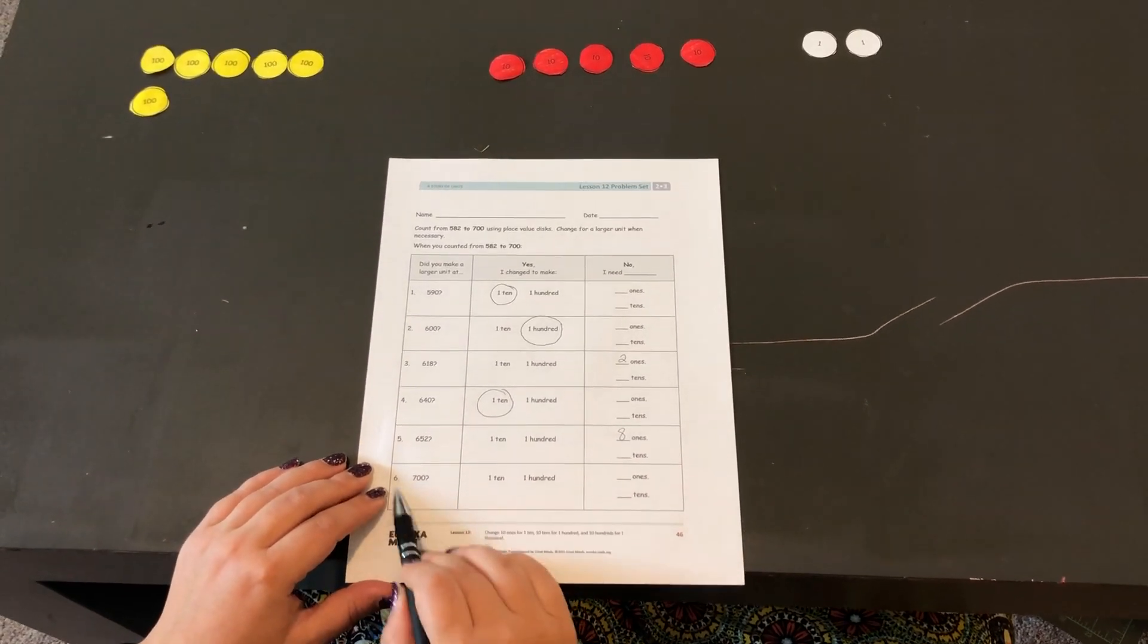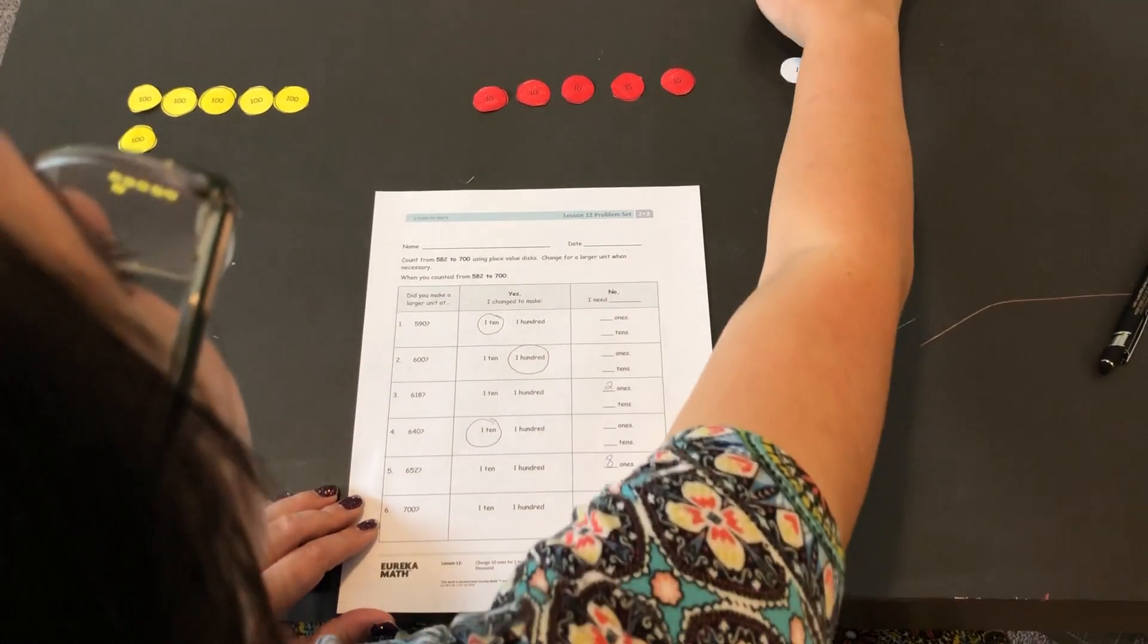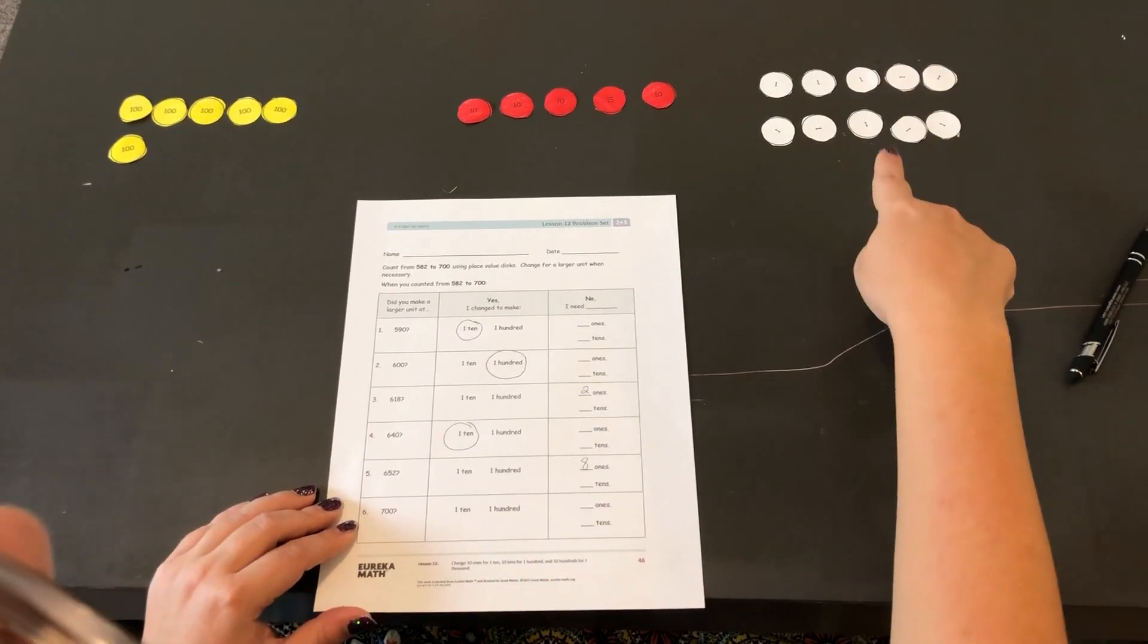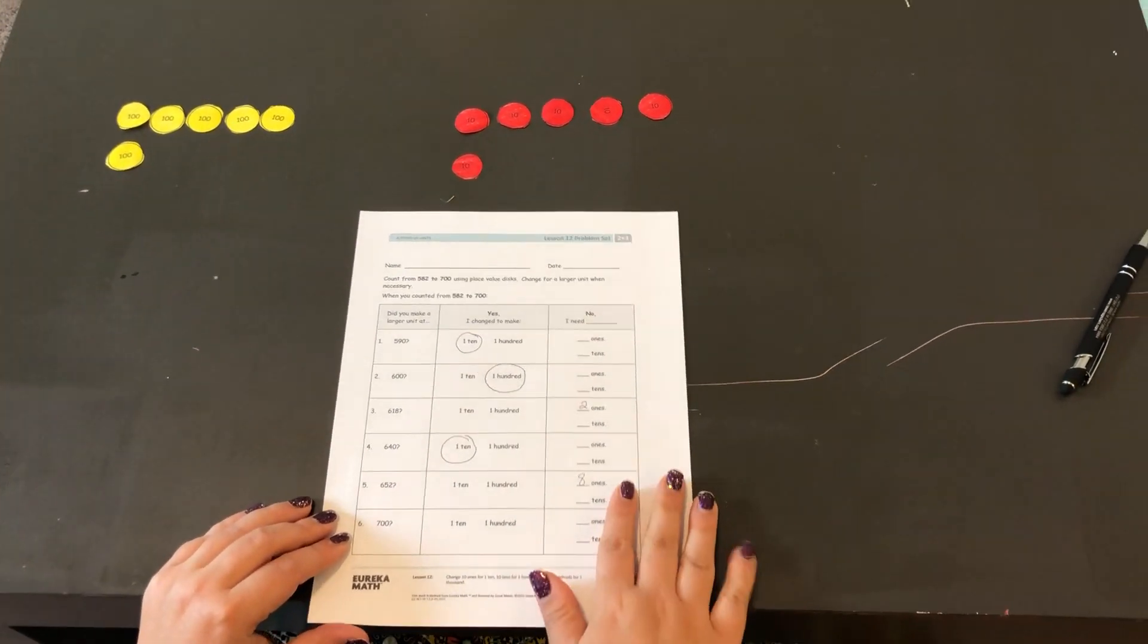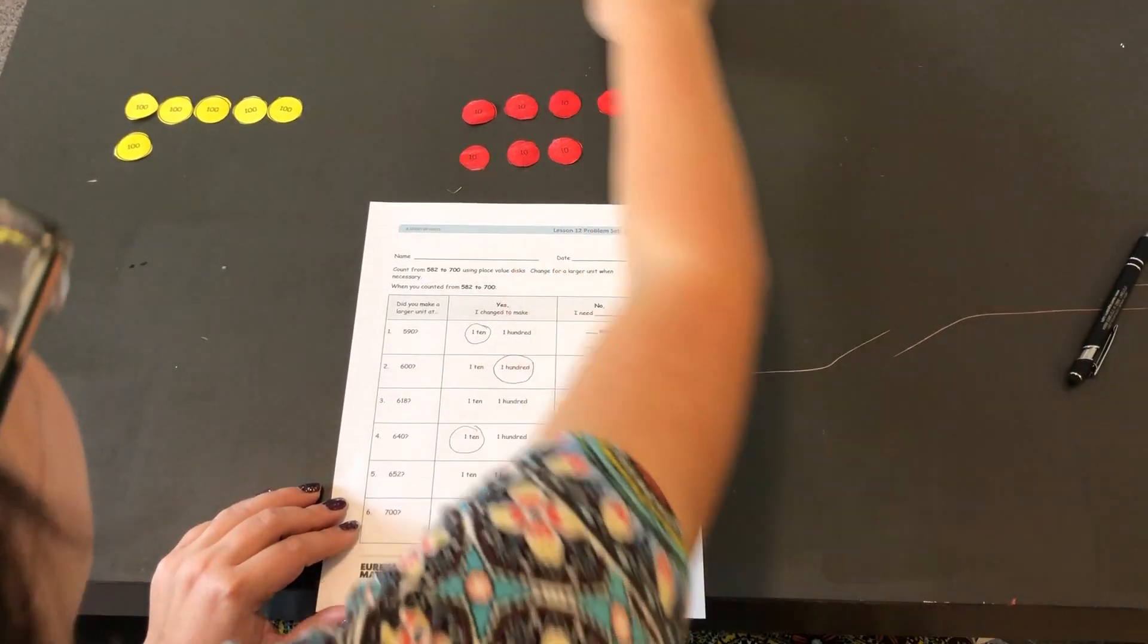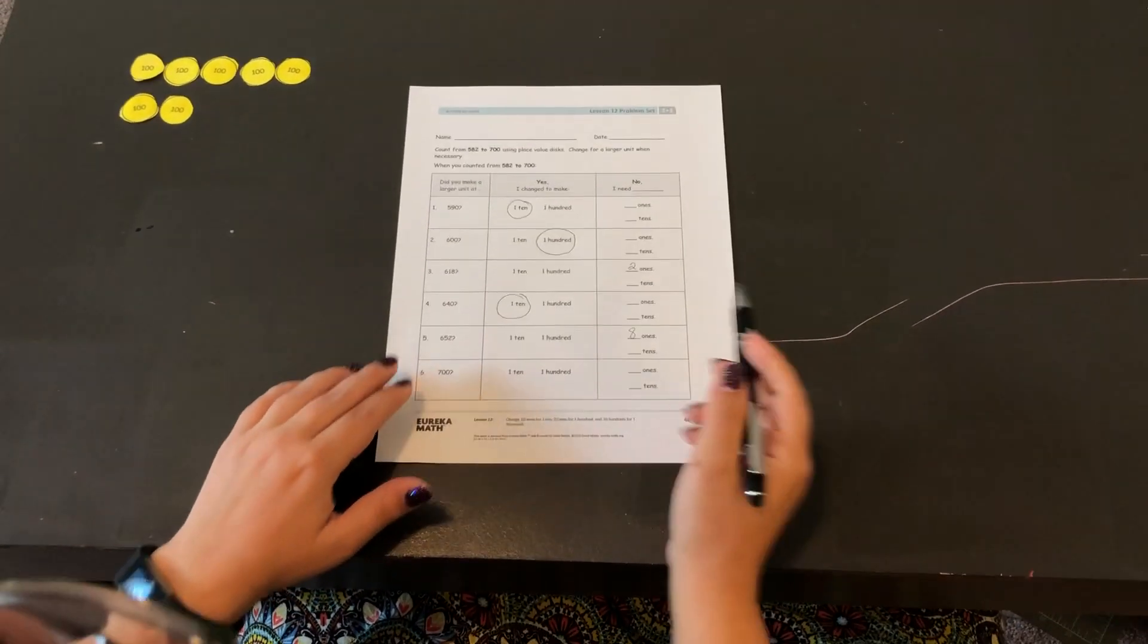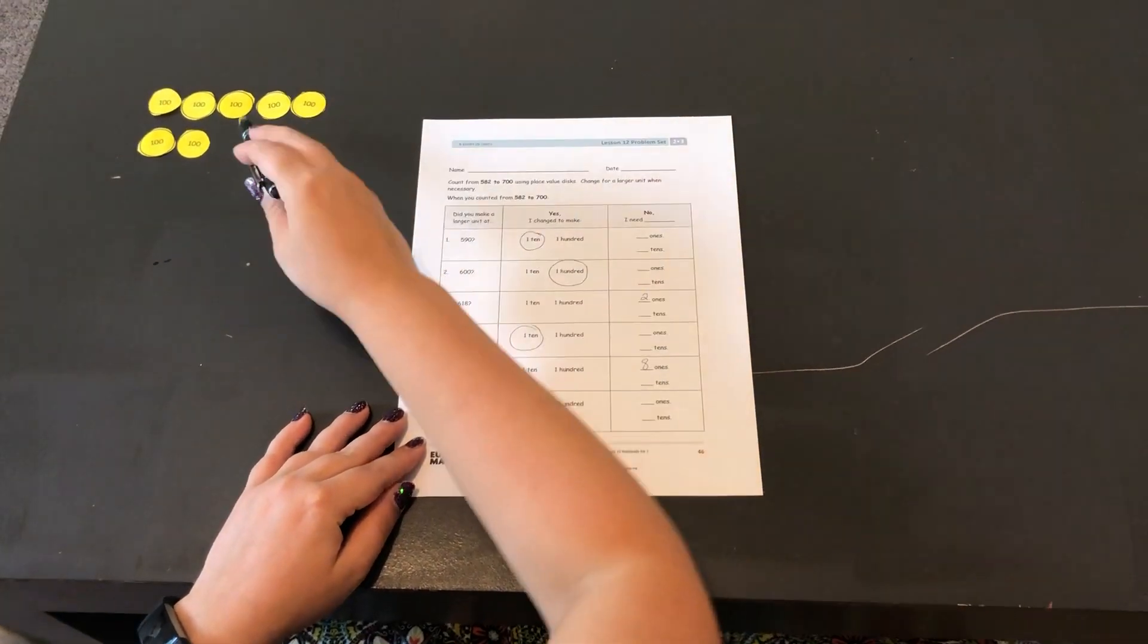And finally, to get to 700. Right now I'm at 652, so I'm going to add those eight ones in. So I take ten ones, I trade that in for one ten. So now I'm at 660, 670, 680, 690, 700. So I take ten tens and I trade that out for one hundred. And I am now at 700. I needed to take ten tens to make that one hundred.